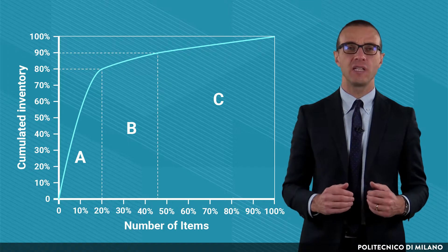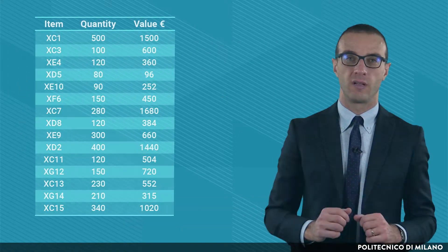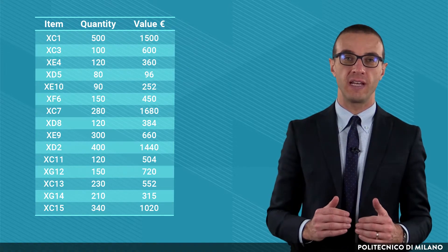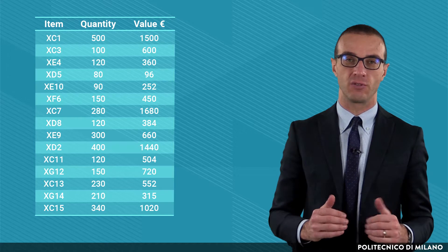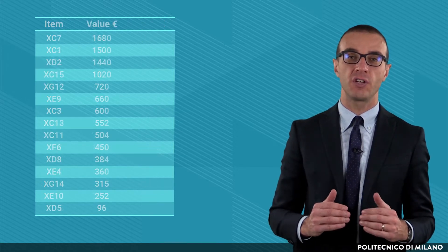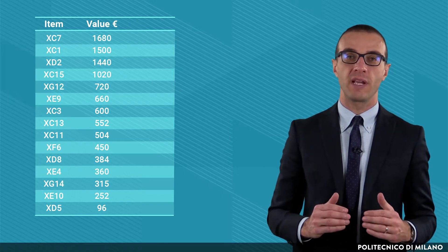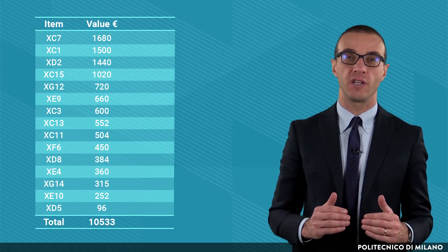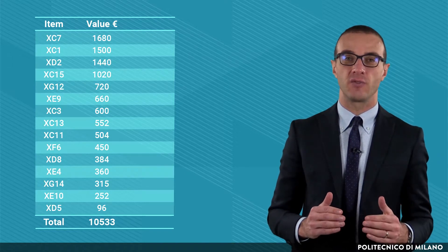How to identify the ABC classes? Let's see an example. First, we need to get both the average quantity on hand and its value for all the items in the warehouse. Second, we have to list the items in order of decreasing value of their stock. Summing up all the values, we find the total value of the stock in the warehouse, which is €10,533.